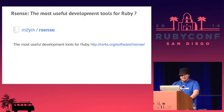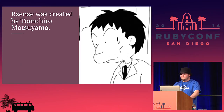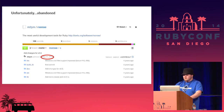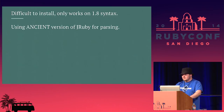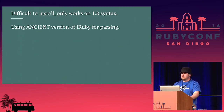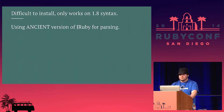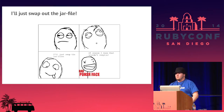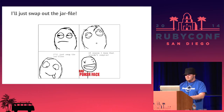I kept digging around and found this tool called R-Sense that did everything I wanted. It was created by Tomohiro Matsuyama. Unfortunately, it was abandoned — the last commit was in 2010. When I got interested in it, it was hard to install, it only worked with Ruby 1.8 syntax, and it was using a really old version, like 1.3 or 1.4, of the JRuby jar to do the parsing of the Ruby source. Being naive and really new to programming, I thought I could just swap out the jar file and everything would work. But I had no idea.